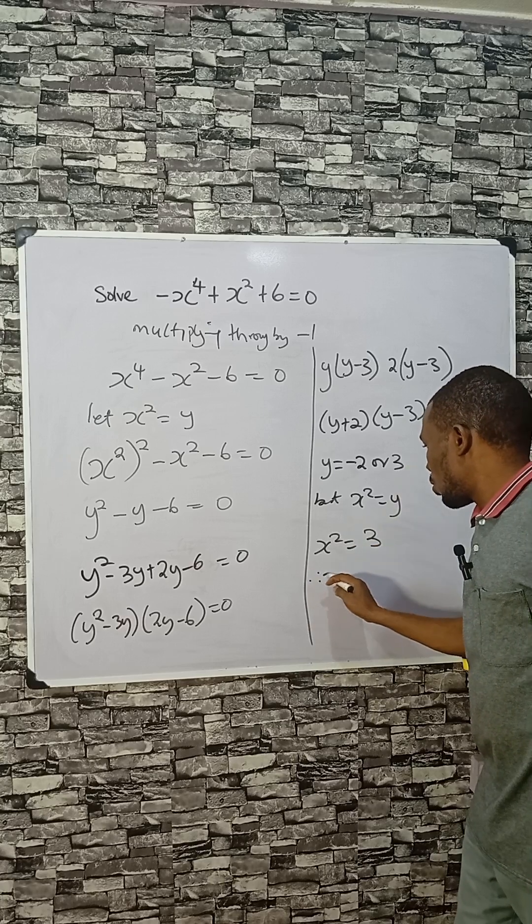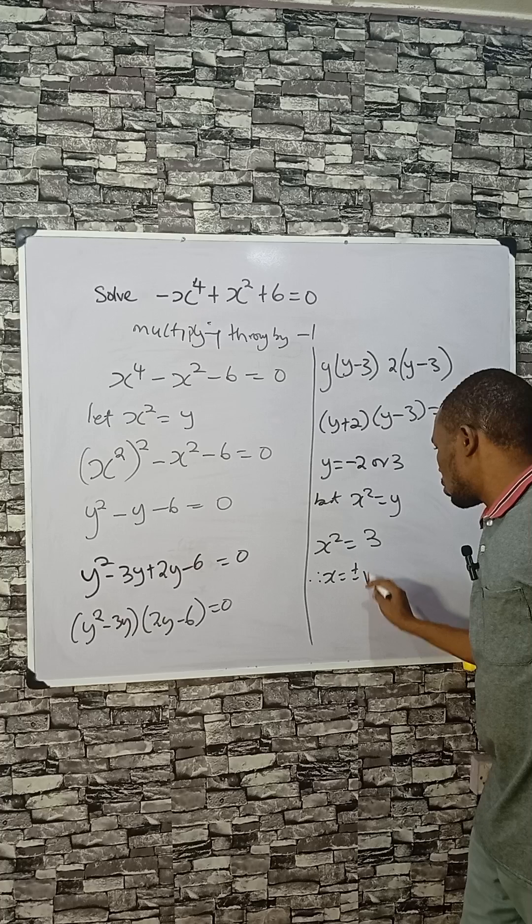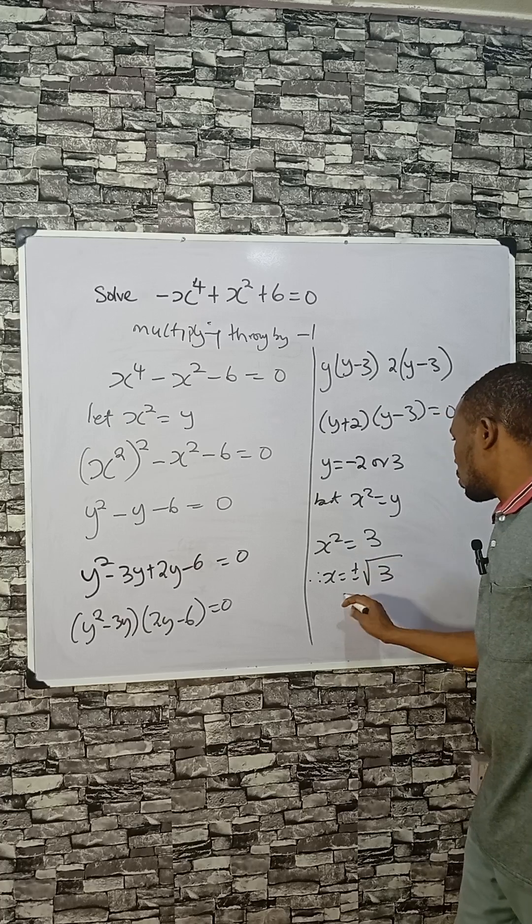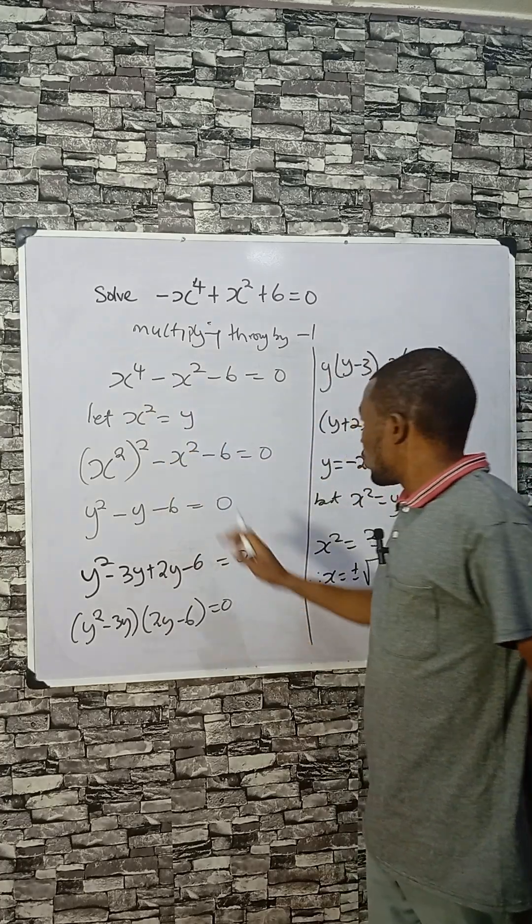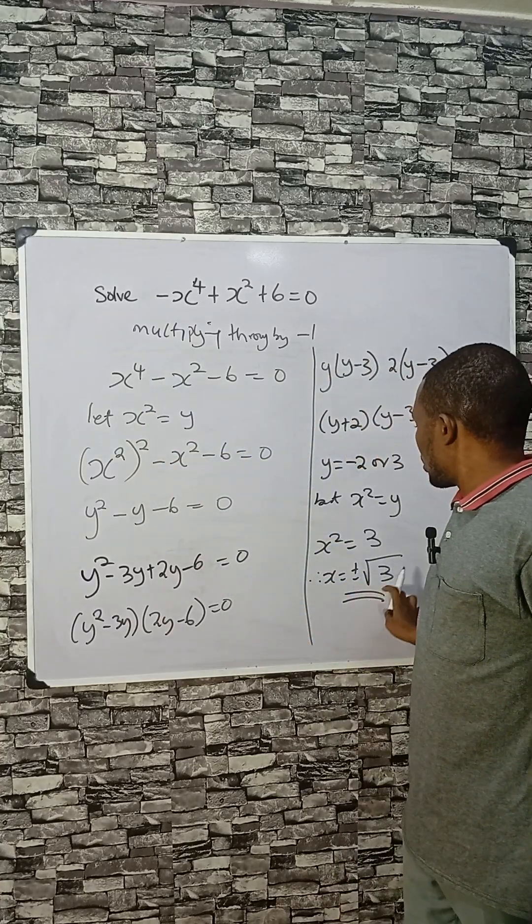So therefore, x equals to plus or minus square root of 3. So the value here for x is plus or minus square root of 3.